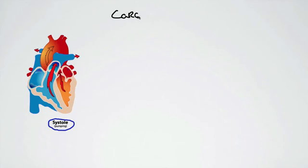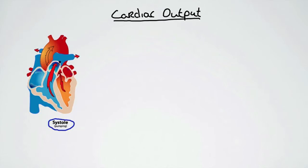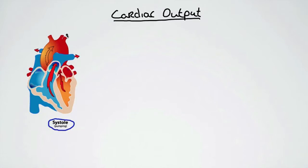We're going to talk about cardiac output today. Cardiac output is the volume of blood being ejected from the ventricles every minute. We're talking about the amount of blood sent from the left ventricle to the rest of the body via the aorta, and also the amount sent from the right ventricle to the lungs — you'd expect those to be the same. For right now, we're going to look at how to calculate cardiac output.